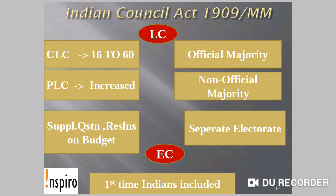In the Morley-Minto Reforms, Morley was the Secretary of State in London and Lord Minto was the Viceroy in India at that time. Lord Minto was also known as the father of communal electorate in India. This was also the first time Indians were included in the Executive Council of the Viceroy — earlier Indians were allowed only in the Legislative Council, but now onwards Indians could participate in the Executive Council of the Viceroy.